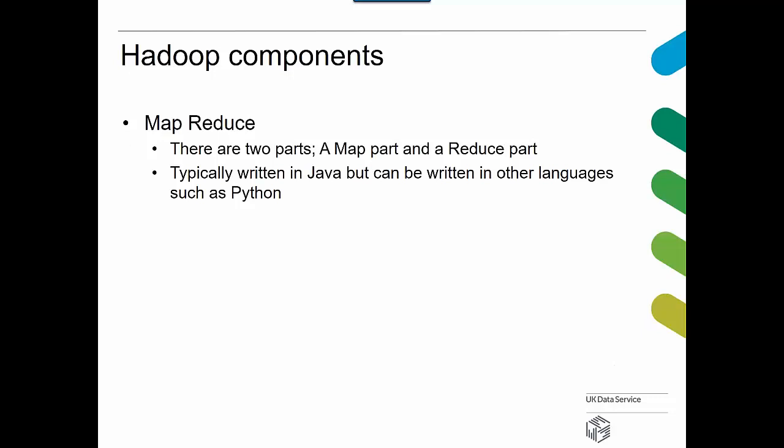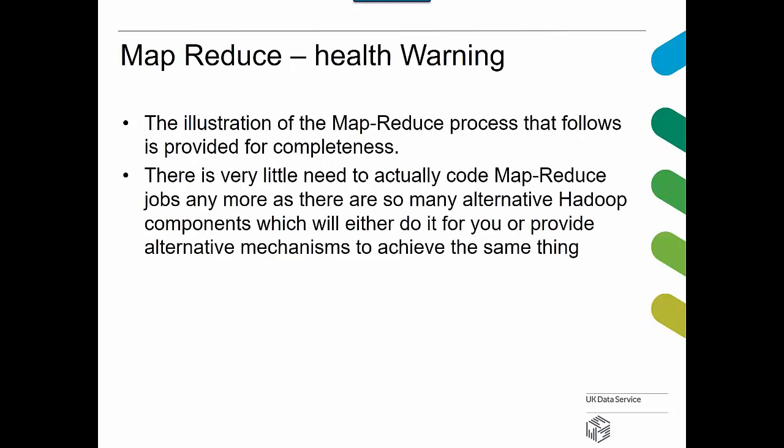The other Hadoop component is MapReduce. There are two parts: a map part and a reduce part — they're just names. Map has nothing to do with maps; reduce typically involves aggregation. They're both effectively small programs, typically written in Java, but can be written in other languages such as Python. MapReduce needs to be shown for completeness in any introductory Hadoop webinar, but you're probably never actually going to have to use it directly, because there are so many alternatives.